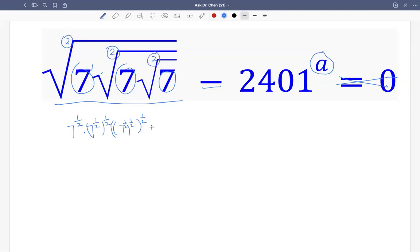Then that equals 2,401 raised by a. Now, the bases are the same - the base is 7. Each base is 7, but this exponent will have half times half, which becomes quarter. This will have half times half times half, which becomes one-eighth.